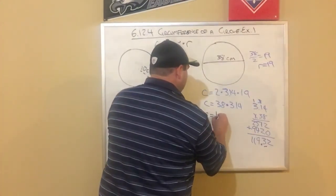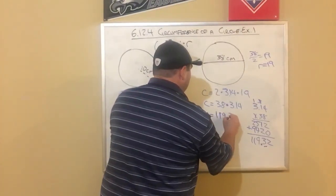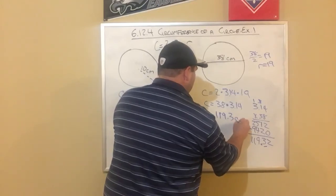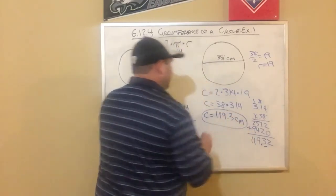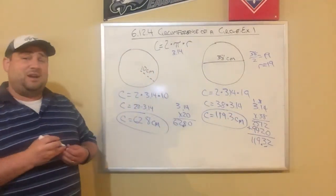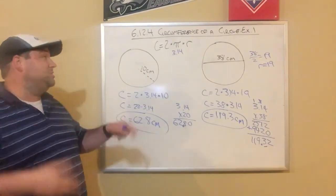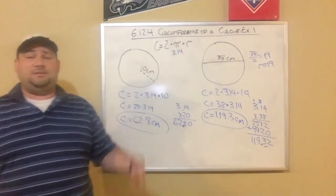So my circumference is 119.3. And that is the second example there. So you can see if your circumference, you're just doing 2 times pi times the radius.